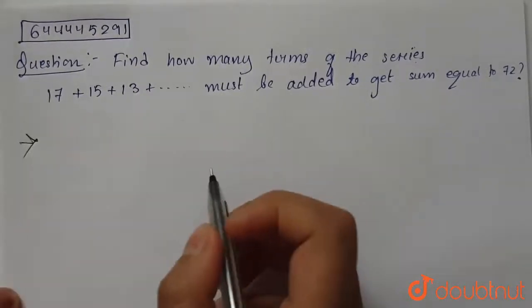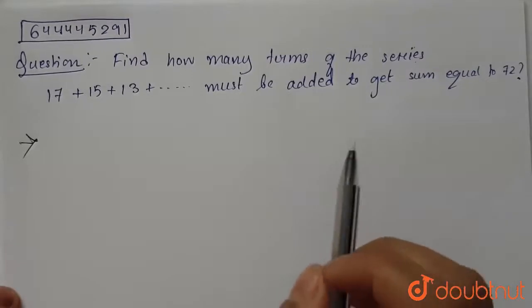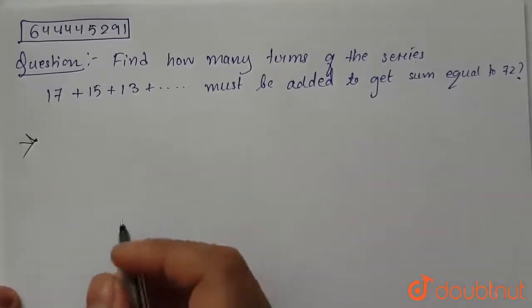So we are given a series in AP and we are asked to find the number of terms which must be added to get the sum equals to 72.